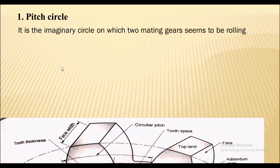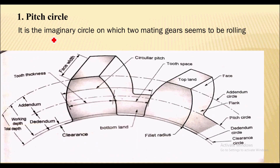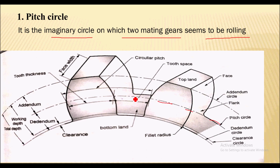The first term in the spur gear is the pitch circle. The pitch circle is the imaginary circle on which two mating gears seem to be rolling. As you can see in the figure, that is the pitch circle, and at this pitch circle two gears will mesh.